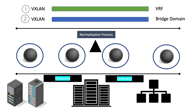Then we have the VRF construct. The VRF in ACI is identical to the VRF you're used to in traditional networking. It contains things like Layer 3 routing instances, routing tables, and IP addresses.